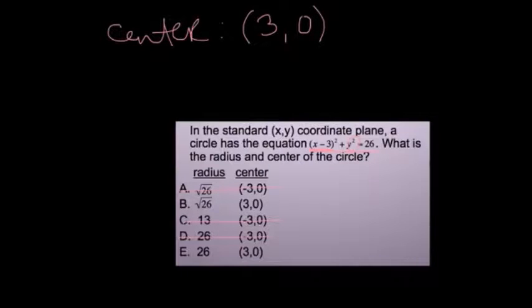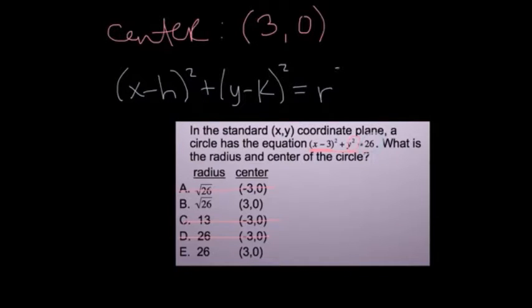Let's just determine the radius now. We see that our equation is equal to 26. And remember, in our equation that looks like this, where h,k is our center, it's written out as radius squared. That means we squared the radius to get 26.